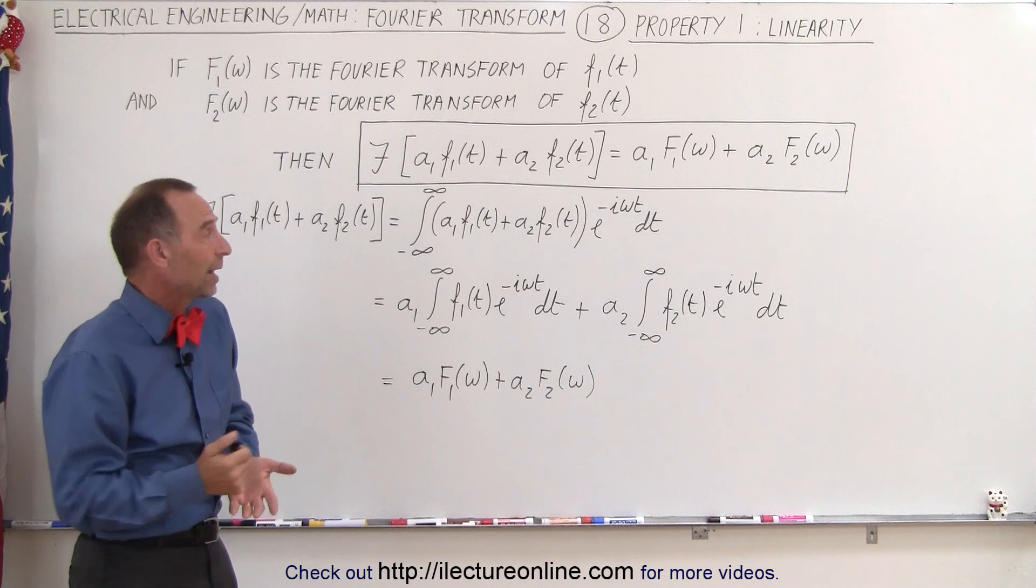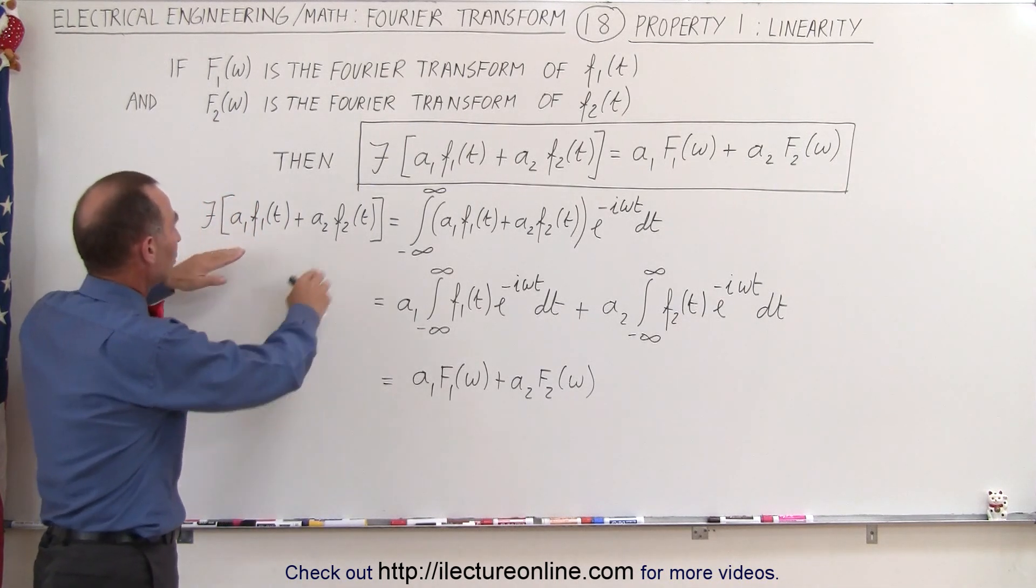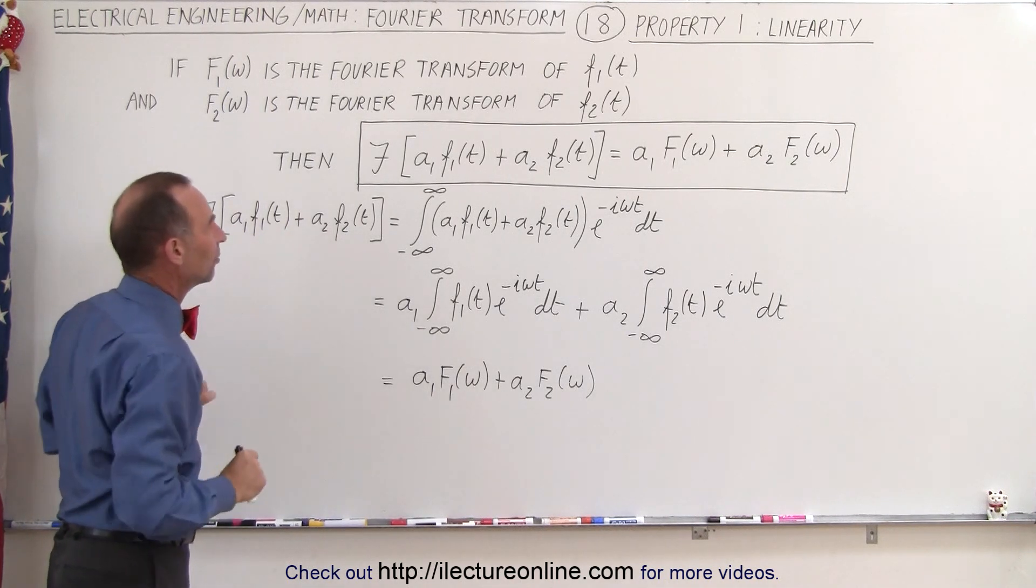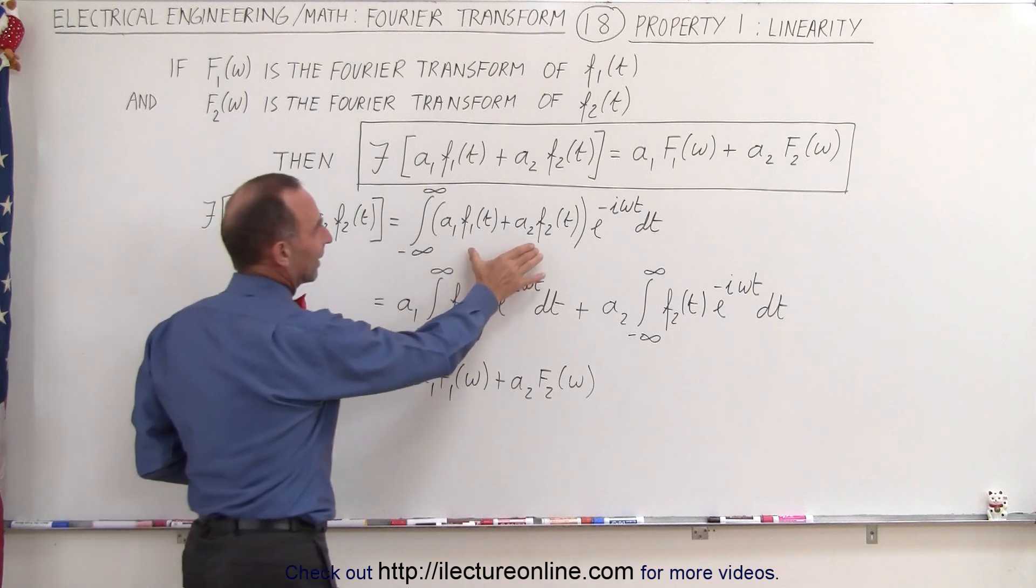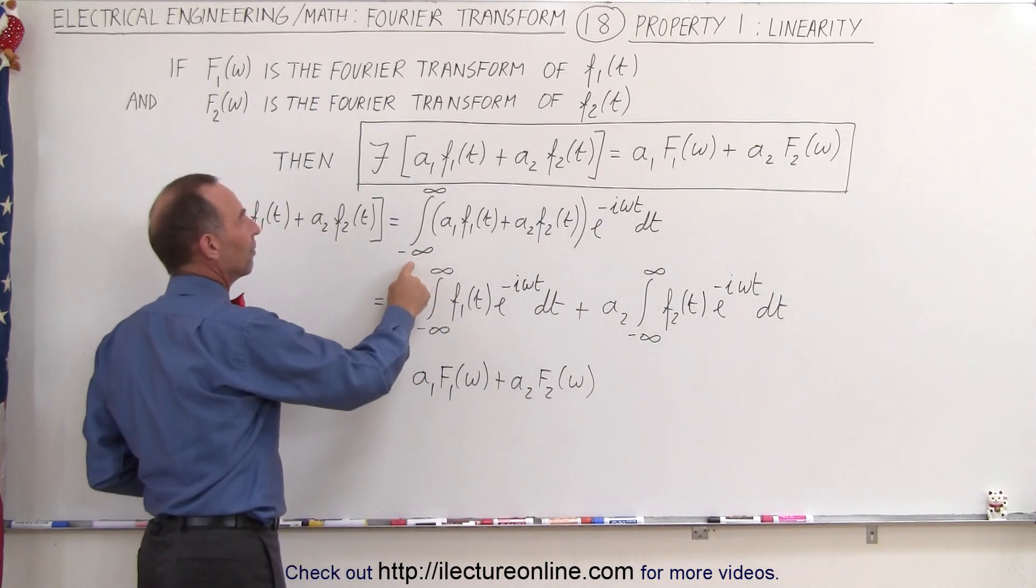Well, it's always good to show mathematically that's indeed the case, so what we're going to do here is take the Fourier transform of that particular input, the sum of those input functions, each of them multiplied by a constant, so that will look like this, times e to the minus i omega t integrated from minus infinity to infinity.